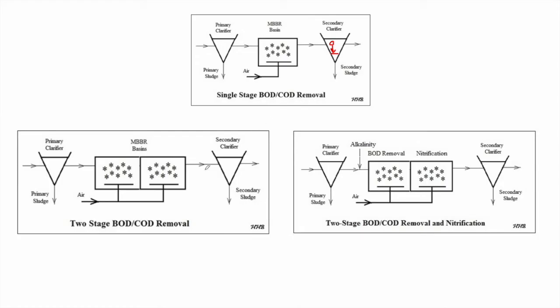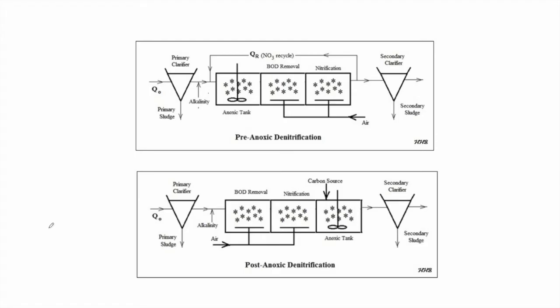In the single stage MBBR process we can only remove BOD and COD. For further removal, we can add another basin. If we also want a nitrification stage, we add a source of alkalinity before the BOD removal tank, and the second basin handles nitrification. Both basins operate under aerobic conditions.